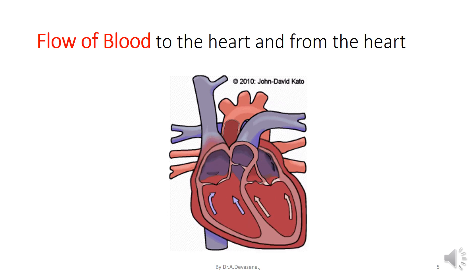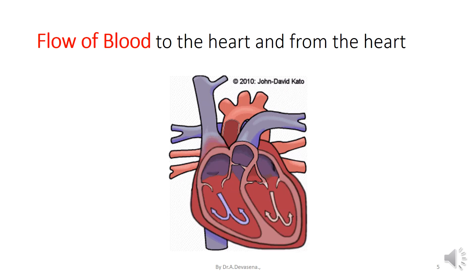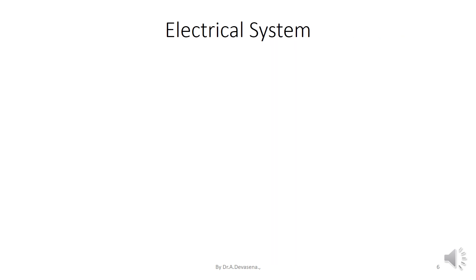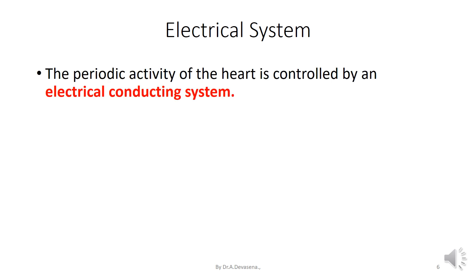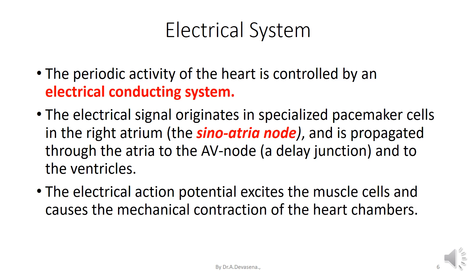The blue color indicates that impure blood is passed to the lungs where it gets purified, and the red color indicates that pure blood from the lungs is passed to the heart. The periodic activity of the heart is controlled by an electrical conducting system. The electrical signal originates in specialized pacemaker cells in the right atrium, i.e., the SA node, and is propagated through the atria to the AV node, a delay junction, and to the ventricles. The electrical action potential excites the muscle cells and causes the mechanical contraction of the heart chambers.